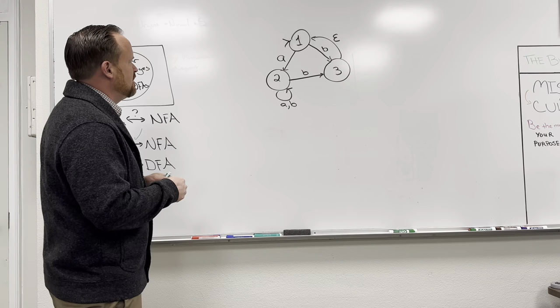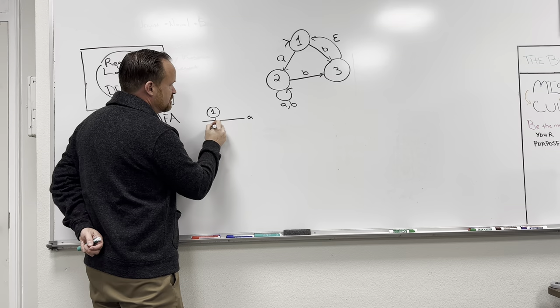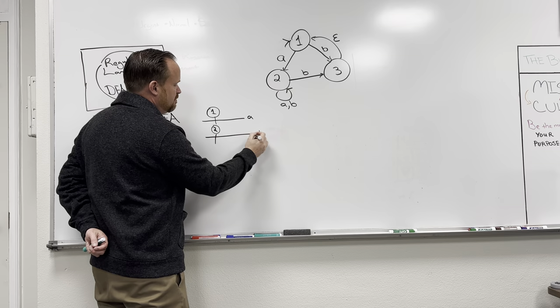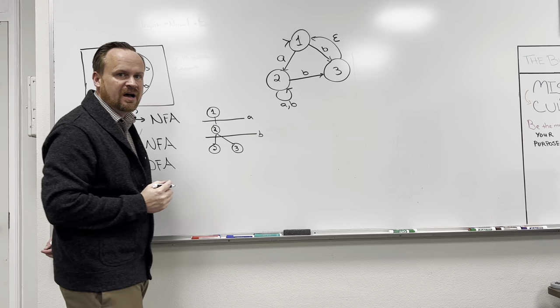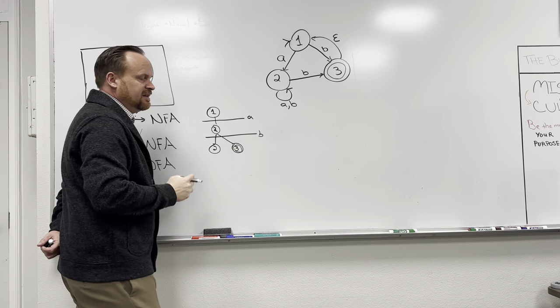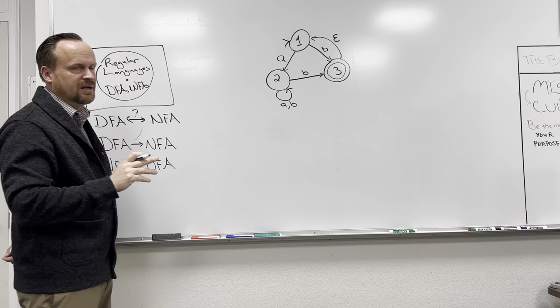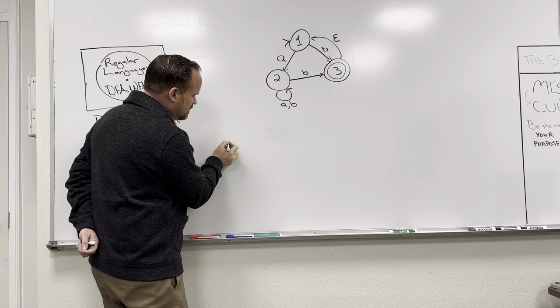Recall how we evaluated NFAs in class. For state one given an A, it goes to state two. Then from state two given a B, it could go to state two or to state three. We'll use this kind of reasoning to construct our equivalent DFA. Step one: rewrite our initial state. This can be complicated in the book when there are epsilon transitions from the initial state, but let's create initial state one, same as in the NFA.